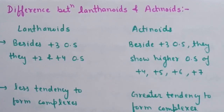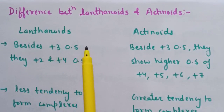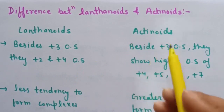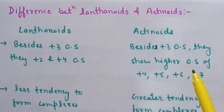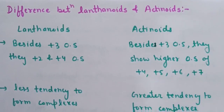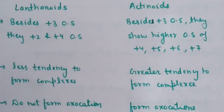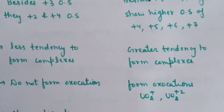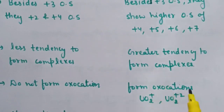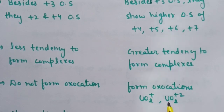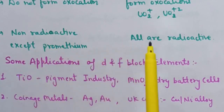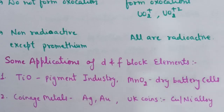Differences between lanthanoids and actinoids: first, in lanthanoids, besides +3 they show +2 and +4, whereas actinoids show higher oxidation states of +4, +5, +6, and +7. Second, lanthanoids have less tendency to form complexes, whereas actinoids have a greater tendency for complex formation. Third, lanthanoids do not form oxo cations, whereas actinoids form oxo cations — for example, UO₂⁺, the oxo cation of uranium. Fourth, lanthanoids are non-radioactive (except promethium), whereas all actinoids are radioactive.